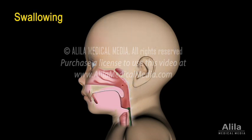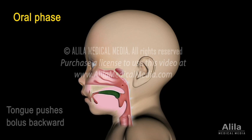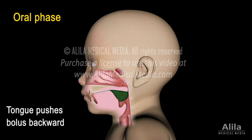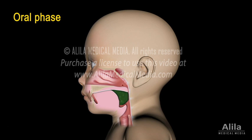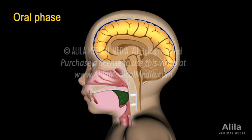Swallowing consists of three phases. The first is the oral, or buccal, phase. This is the voluntary part of swallowing. The food is moistened with saliva and chewed. A food bolus is formed and the tongue pushes it to the back of the throat, the pharynx. This process is under neural control of several areas of the cerebral cortex, including the motor cortex.